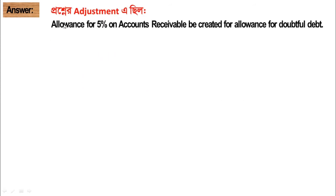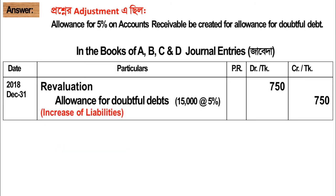Next: allowance for five percent on accounts receivable, to be credited for allowance for doubtful debts. The entry is: Allowance for Doubtful Debts credit, and Revaluation account debit.